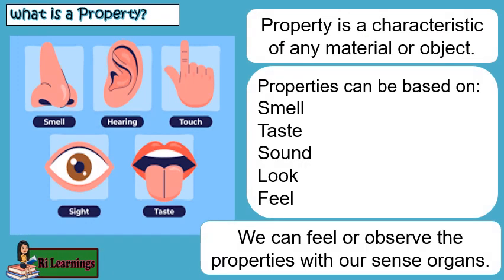What is a property? Property is a characteristic of any material or object. Properties can be based on smell, taste, sound, look, and feel. We can feel or observe the properties with our sense organs.